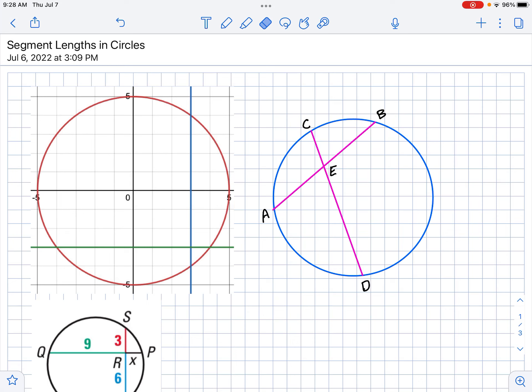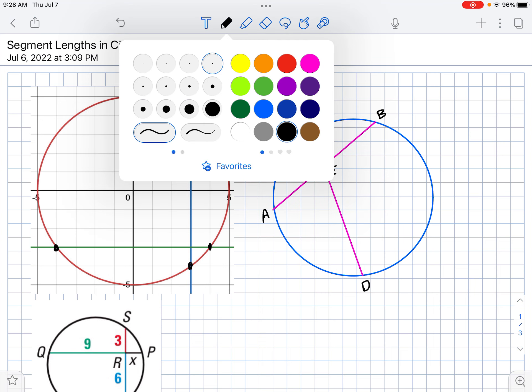Now we want to make some observations about segment lengths and circles. For example, look at this first circle I've got here. You'll notice I've got a couple of chords. I've got the blue chord right here. Let's see if we can make an observation about this particular intersection.